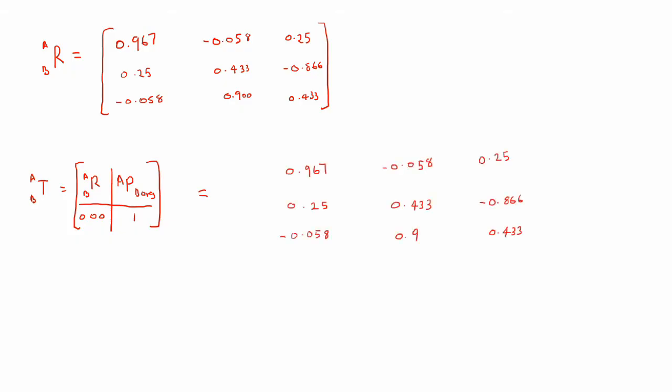We just found our RAB and the question gave us PAB origin so by substituting these in you would get your RAB and your position vector as being 10, minus 5, 4. The last row would be 0, 0, 0, and 1.